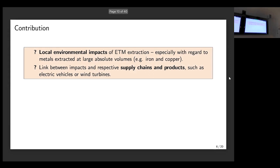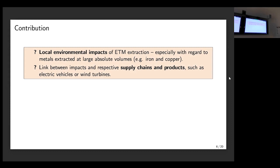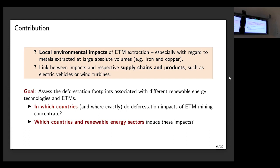We already know quite a lot about the material requirements of the renewable energy transition, but what are the exact research gaps? We found basically two points especially relevant for us. On the one hand, we do not know enough about the local environmental impacts of the extraction of ETMs, especially with regards to metals extracted at large absolute volumes — so iron, copper, but also nickel or bauxite. We highlight these materials because other metals such as lithium or cobalt have recently gained quite some media and research attention, so we want to focus on bulk commodities here.